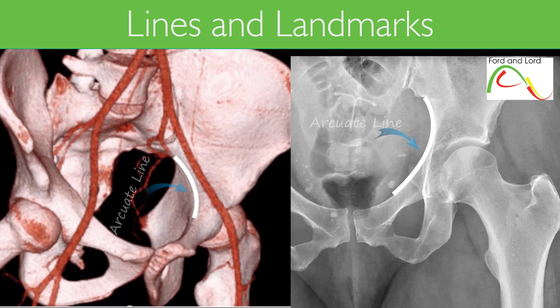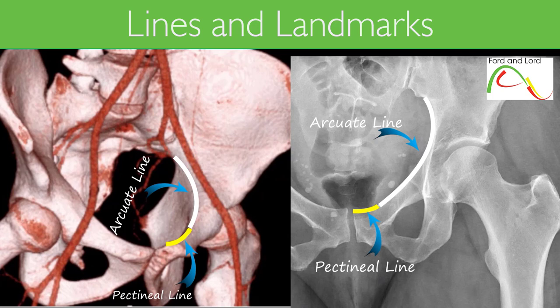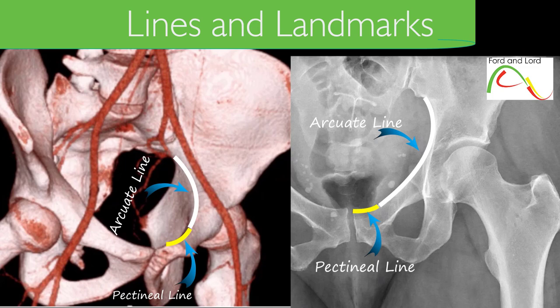The arcuate line of the ilium is a smooth, curved border on the internal surface of the ilium, which is the uppermost and largest of the hip bone. The arcuate line is immediately inferior and medial to the iliac fossa.